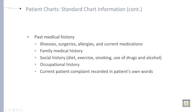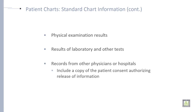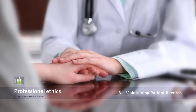Occupational history, like working conditions. Current patient complaint recorded in the patient's own words. Then physical examination results. Results of laboratory and other tests recorded from other physicians or hospitals — include a copy of the patient consent authorizing release of information.